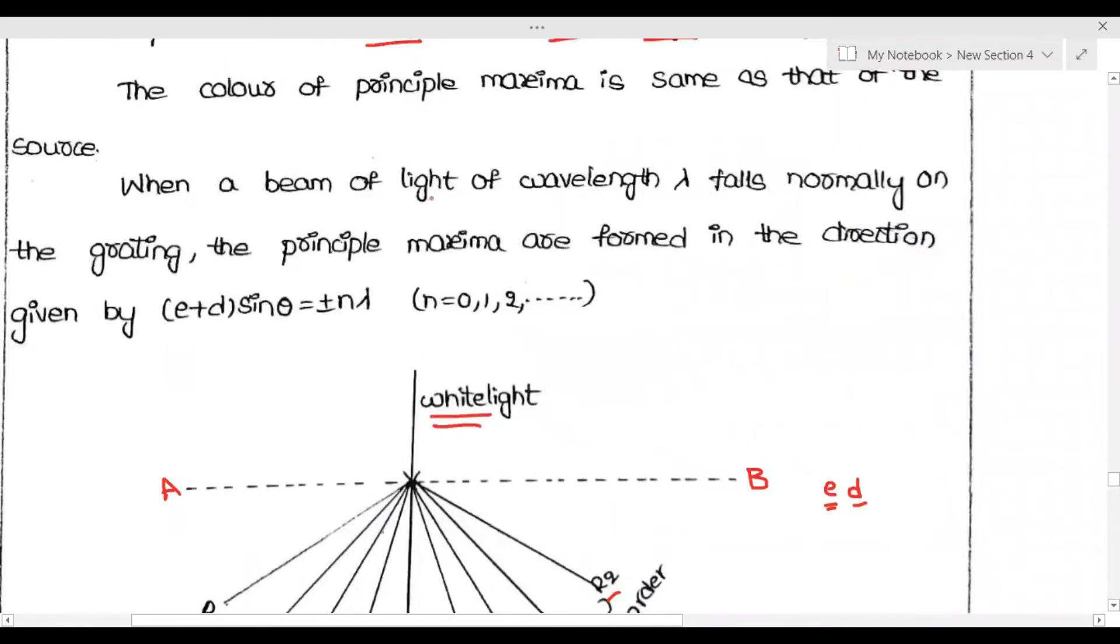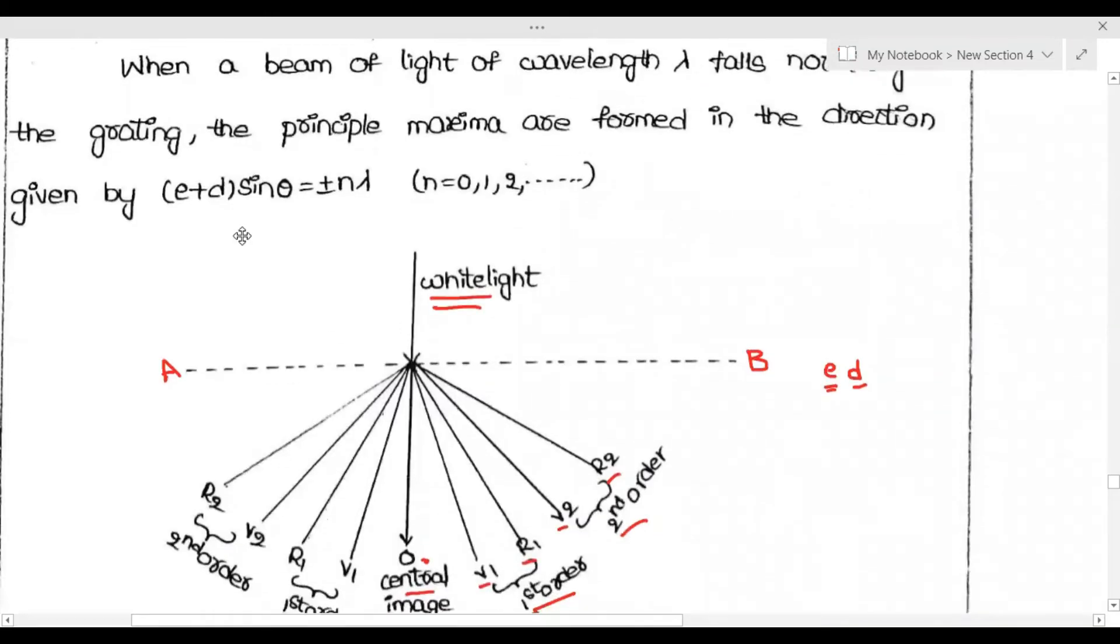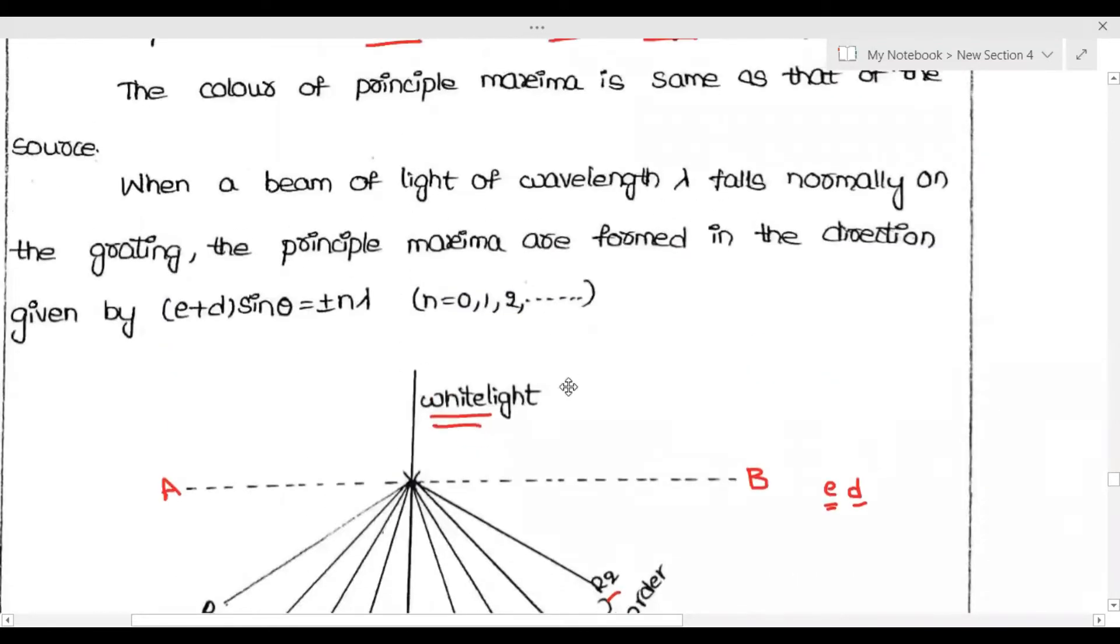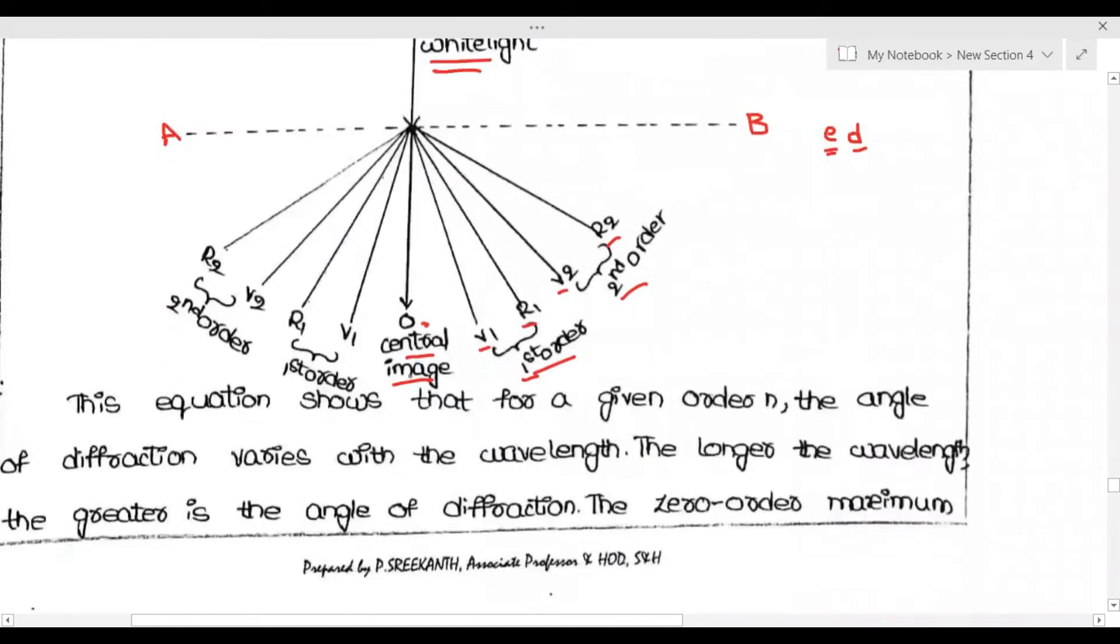When a beam of light of wavelength lambda falls normally on the grating, the principal maxima formed in the direction is given by (e+d)sin(θ) = ±nλ. The grating is normal to incident light, so it forms a principal maximum and secondary maximum.